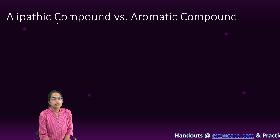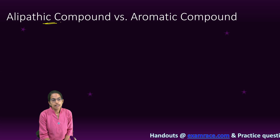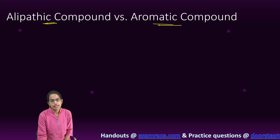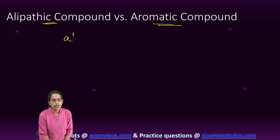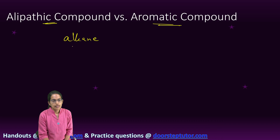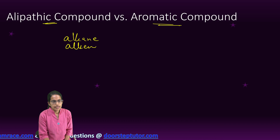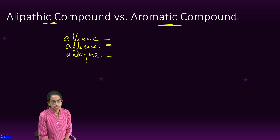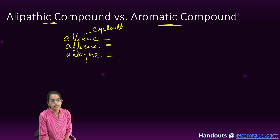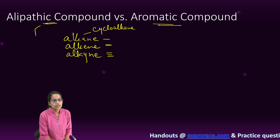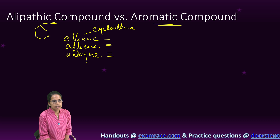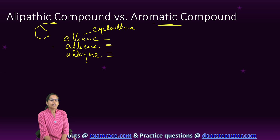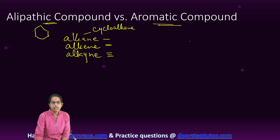What is the real difference between an aliphatic compound and an aromatic compound? Aliphatic compounds can be alkane, alkene, or alkyne — that means single bond, double bond, or triple bond. Within the alkane category, there can also be cycloalkane, which means it is a cyclic ring but without any resonating structure.